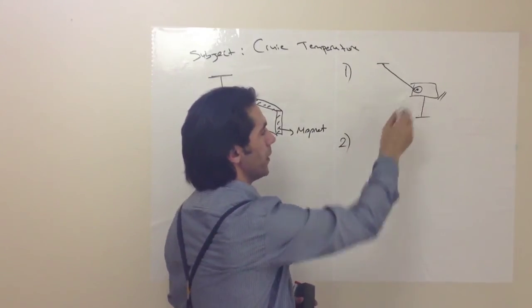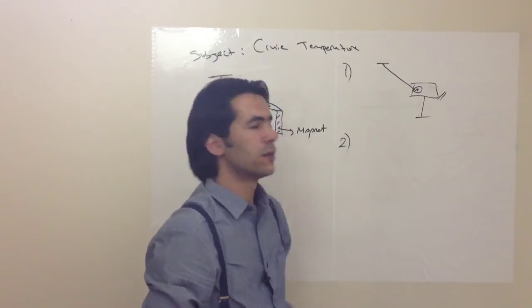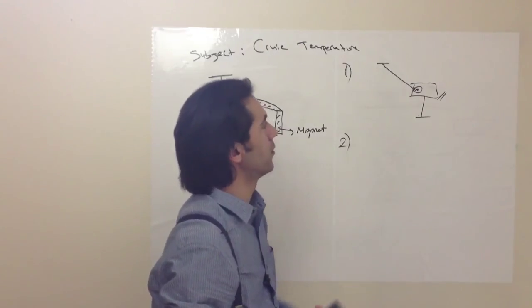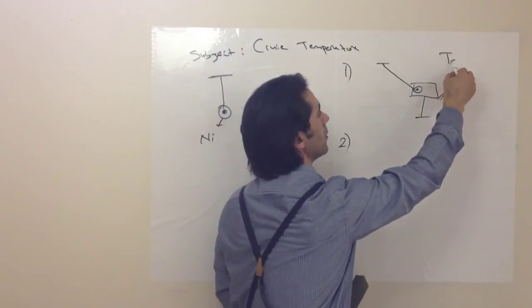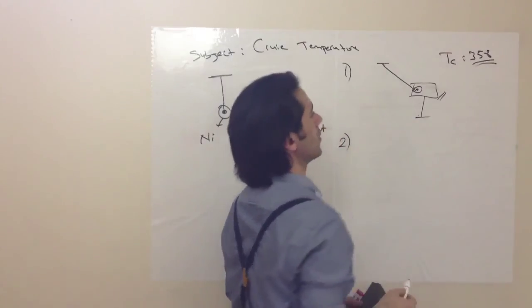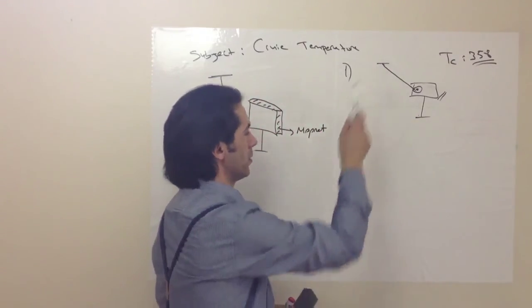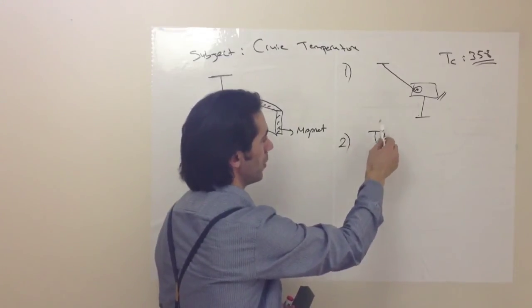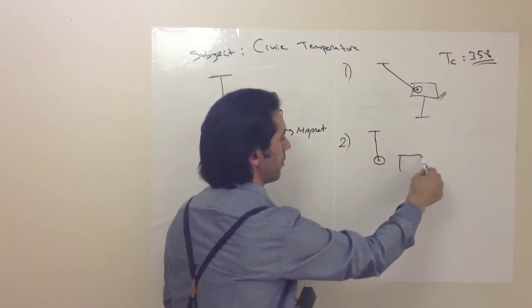If you heat that nickel metal above 358... this is our Curie point. If you heat above that degree, it will leave from the magnet. It will become like that.